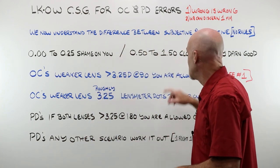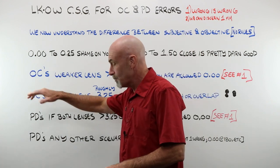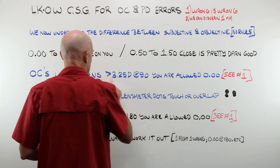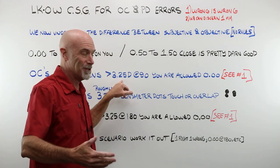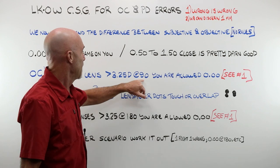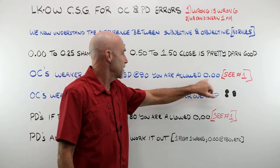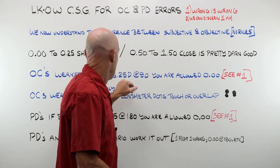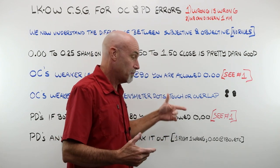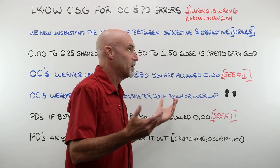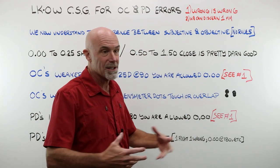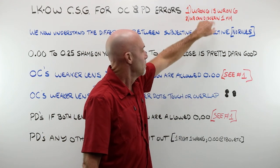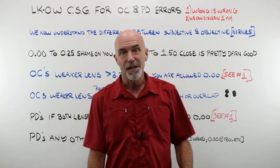For OCs in our weaker lens and the power is greater than 3.25, 3.50, and up at 90, you are allowed exactly nothing. It's just that simple. Anything over 3.25 is 3.50. 3.50 more than one millimeter. It just, you're automatically out of that range. Okay? So if you're more than that, scene number one, wrong is wrong. Send it back and get it remade right.